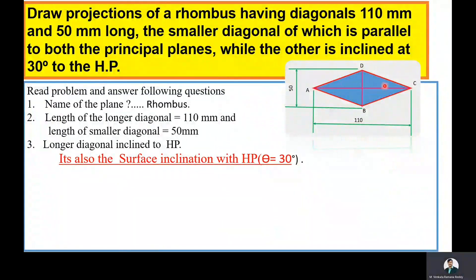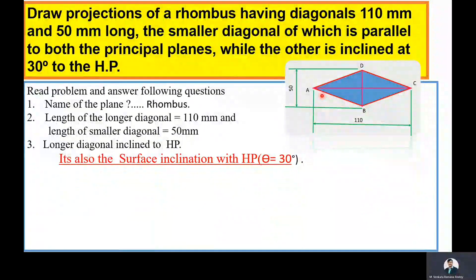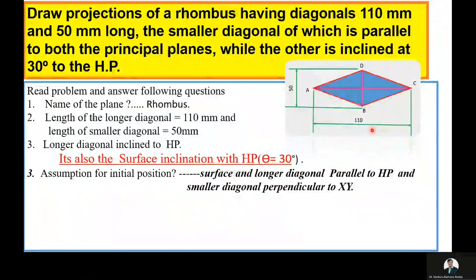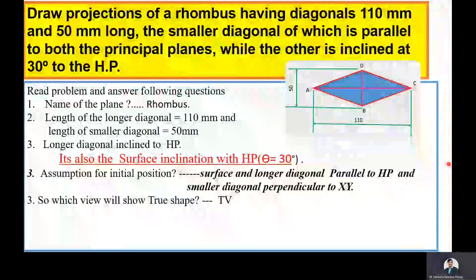Because the surface is inclined to HP, for the initial position assumption we assume the rhombus plane is parallel to the horizontal plane, so that its longer diagonal is parallel to HP and the smaller diagonal is perpendicular to the XY line. In the top view only, we are able to see the true image of the plane.